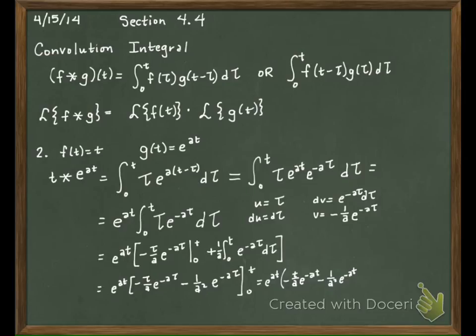That's going to go to zero, so we'd have a plus zero here because it's minus a negative. And then that lower limit would be minus a negative one over A squared, and then E to the zero would just be one, right?